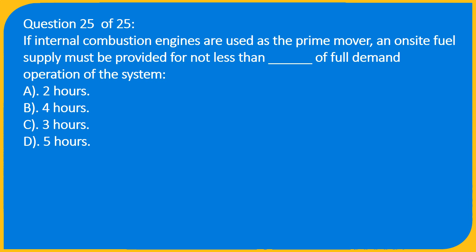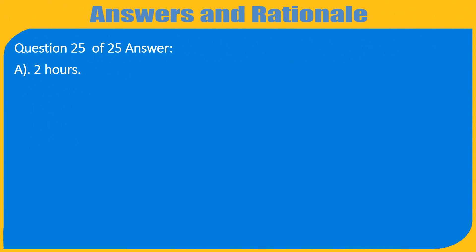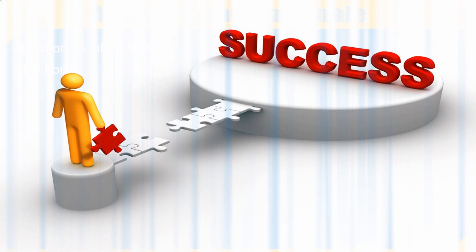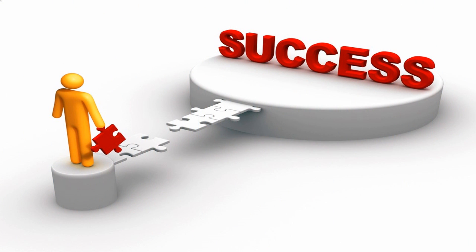Question 25 of 25: How many hours must a system operate? A. 2 hours, B. 4 hours, C. 3 hours, D. 5 hours. Answer: A. 2 hours.